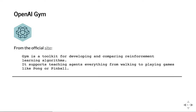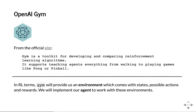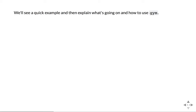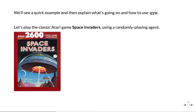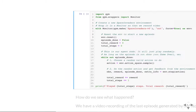Let's talk about OpenAI Gym, our framework. Gym is defined as a general toolkit for developing and comparing reinforcement learning algorithms. It actually comes with very useful environments that you can play with. It will provide us the environment part from the reinforcement learning setting — we'll basically create our agent that will interact with it. First, we'll see a quick example using Gym: playing a classic Atari game called Space Invaders, first using a completely random strategy.